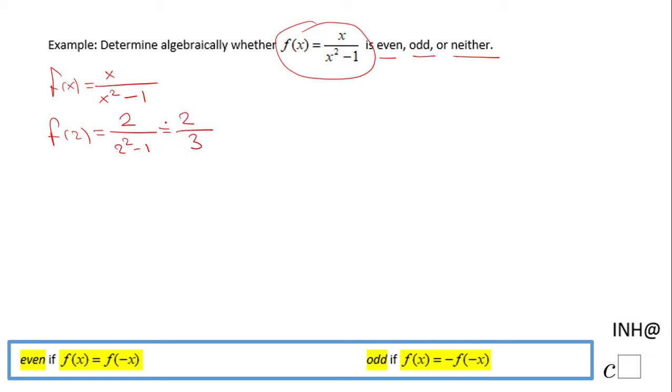Similarly, I'm going to do f(-2). f(-2) = -2/((-2)² - 1) = -2/(4 - 1) = -2/3. If you notice, these two values are not the same - they are opposites.